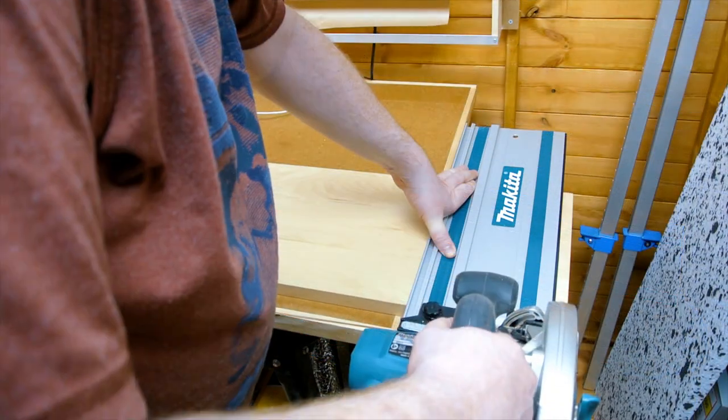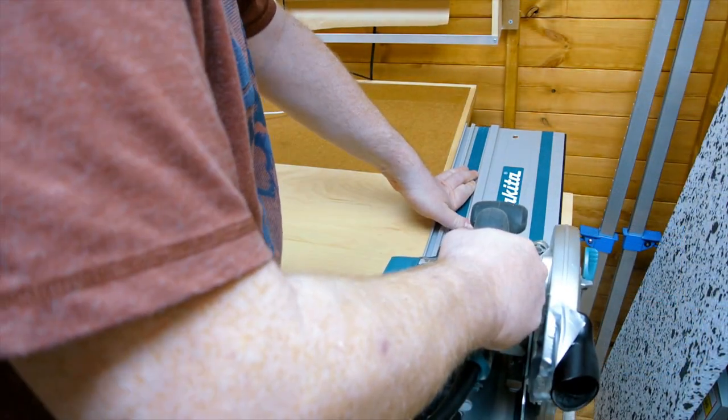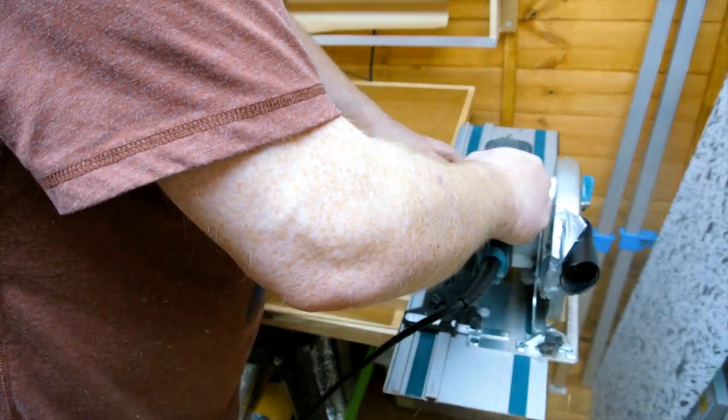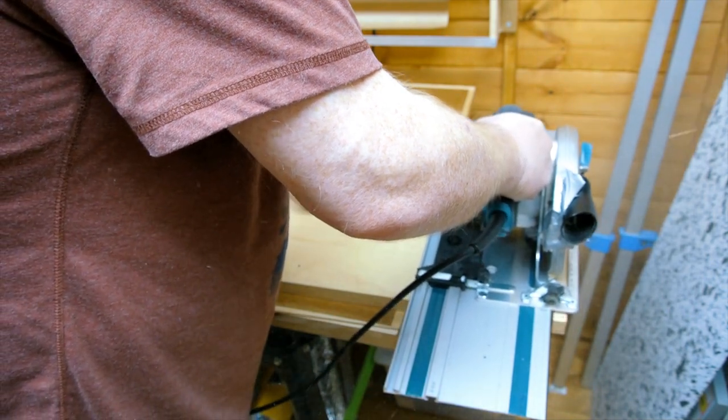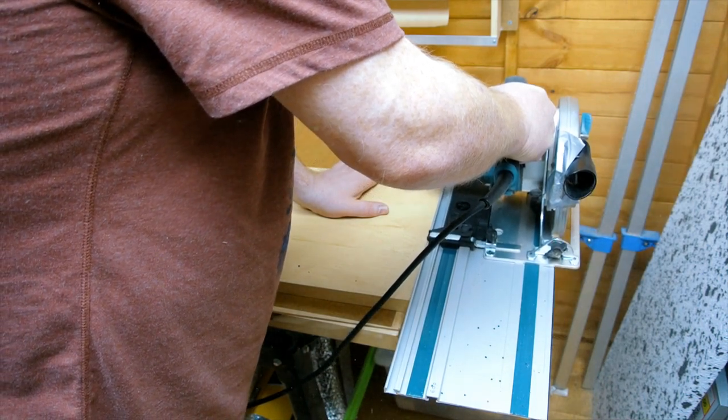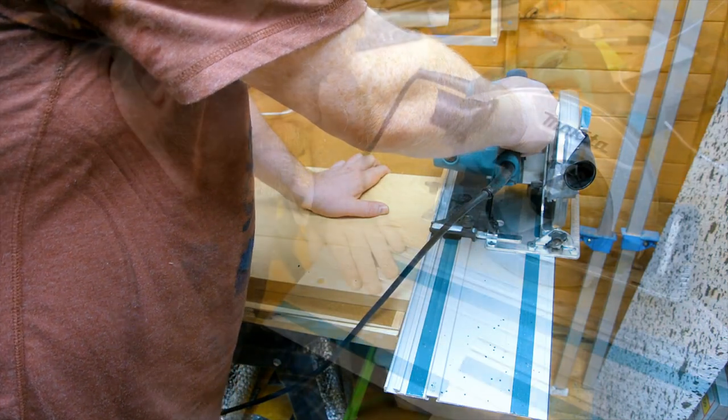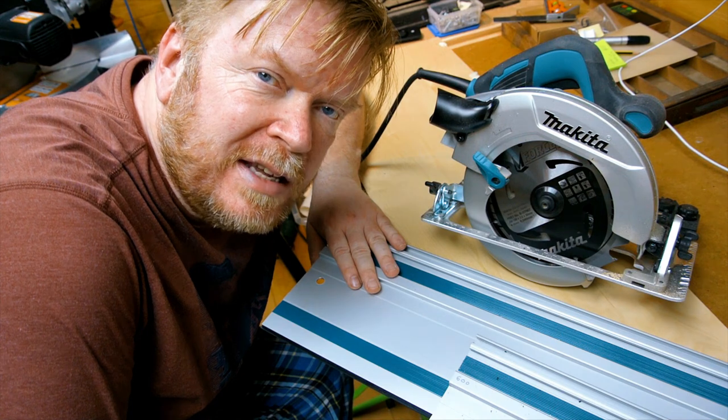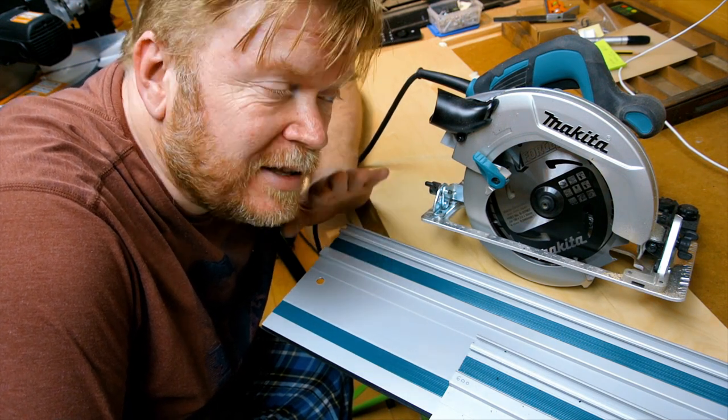So there we go. I think two shorter rails for my Makita circular saw is going to be a great bonus to this little system.